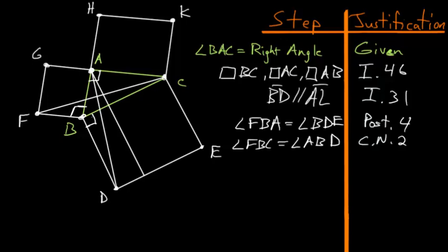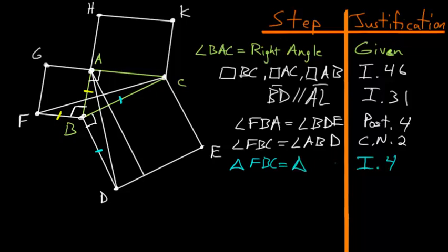We have two triangles, FBC and ABD, and they each share this angle here — the angles are equal to each other. Also notice that triangle ABD has this side length, and triangle FBC also has that side length, and each triangle also shares this other side length. So in each triangle we have a side, an angle, and a side. By Book 1, Proposition number 4 — the side-angle-side criterion — the two triangles are equal to each other. So triangle FBC is equal to triangle ABD.